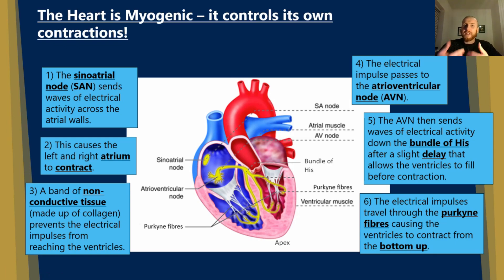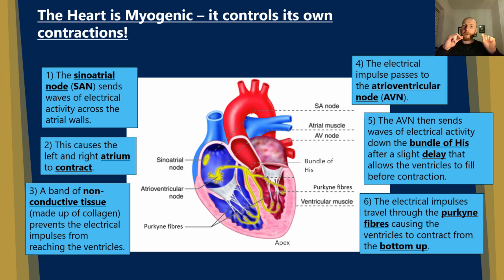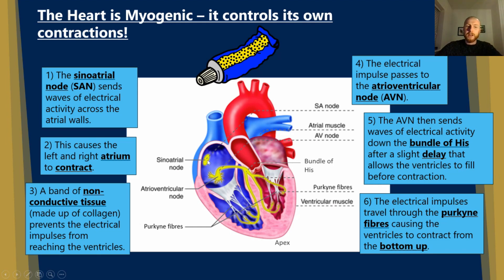Think of it like a tube of toothpaste — you wouldn't squeeze it near the nozzle because you wouldn't get all of the toothpaste out. Instead, you'd roll it up from the bottom so all the toothpaste can be removed. So to recap: the sinoatrial node sends waves of electrical excitation across the atria. After a delay, it goes to the atrioventricular node, then down the bundle of His to the Purkinje fibers, and the ventricles contract from the apex up. Remember to use the term apex — it comes up in exam questions.